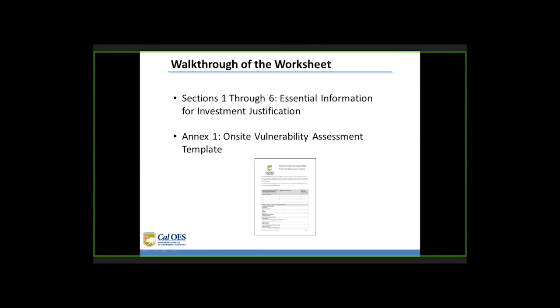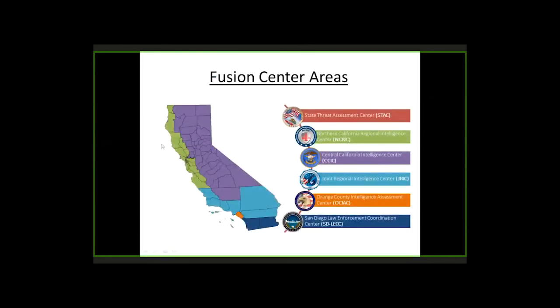In summary, we've walked through the worksheet — Sections 1 through 6 are the worksheet proper, followed by Annex 1, which is a guide and aid to completing a vulnerability assessment on site. The fusion centers in California have defined areas of responsibility. You can see a map of California with each fusion center's area outlined in a separate color. Contact information for the fusion centers will be shown on the following slide.